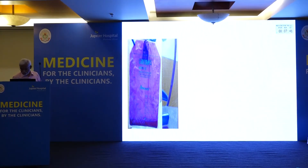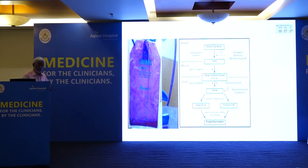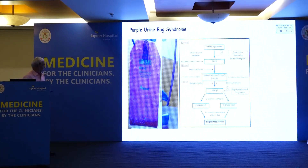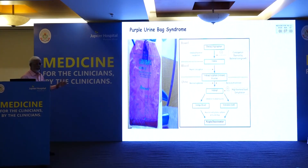A patient was referred from the orthopedic ward. He had paraplegia, was on long-term catheterization, and had purple urine in the bag. The cause was constipation: dietary protein indole gets deconjugated, and bacterial growth — endotoxins — converts it to indigotin and indirubin, which react with the plastic bag to produce purple color. This is called purple urine bag syndrome. This patient was treated only by treating constipation.